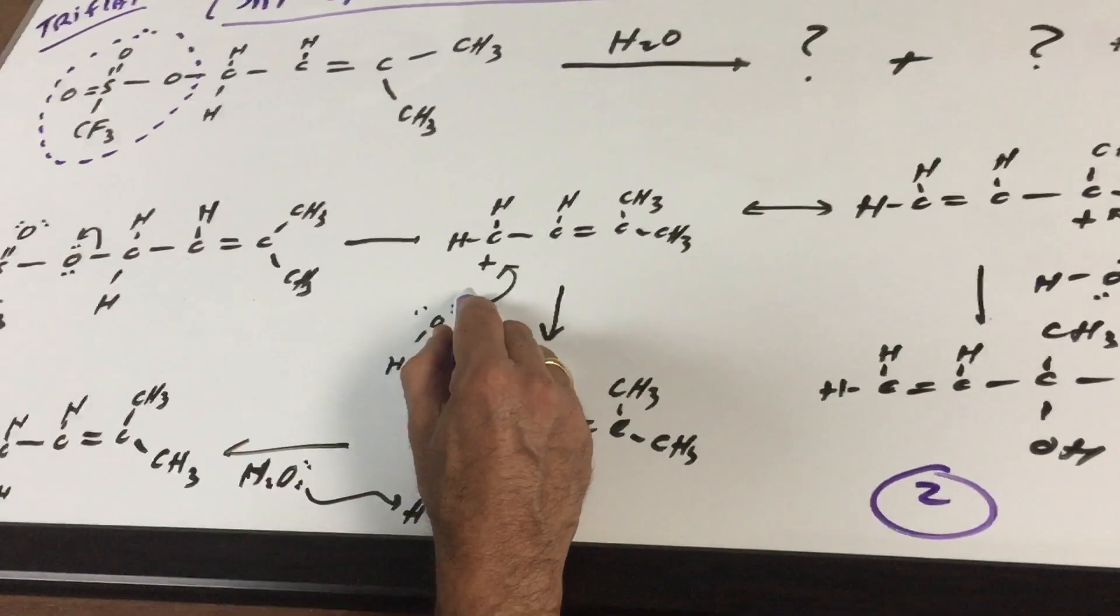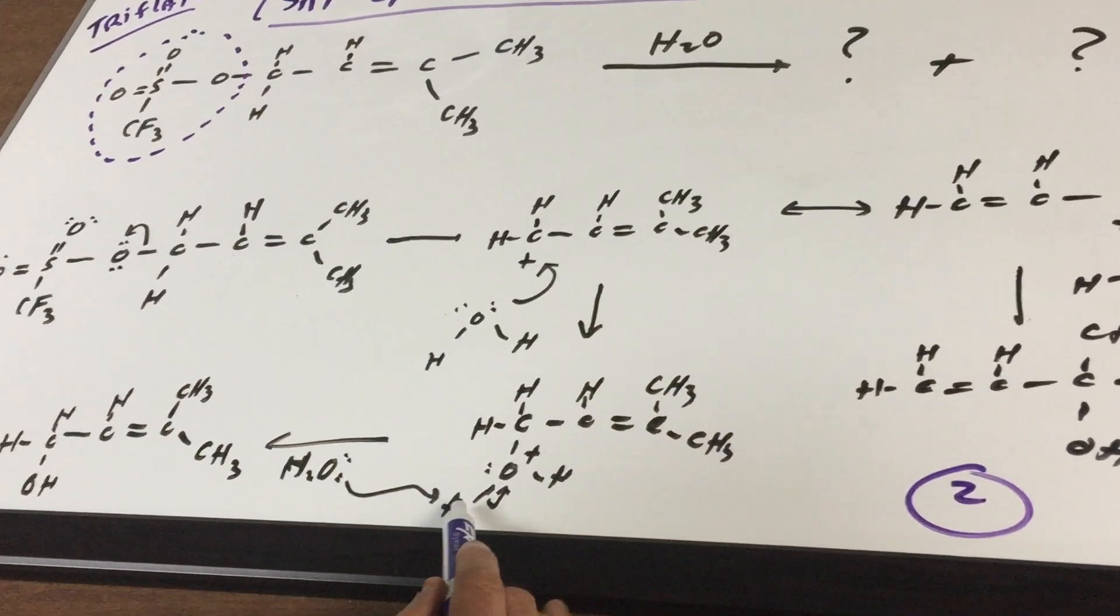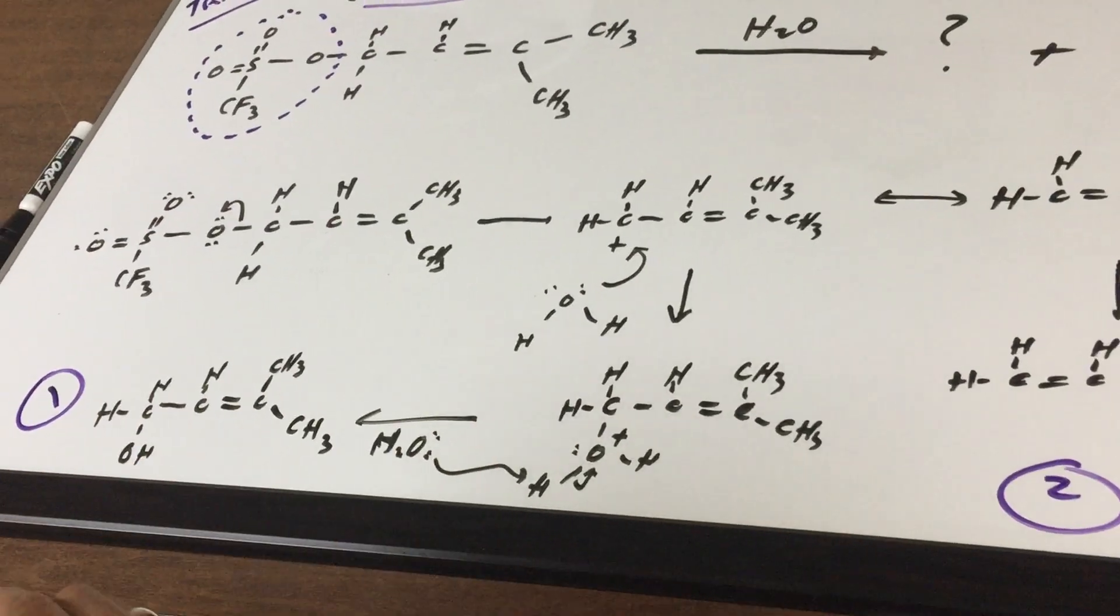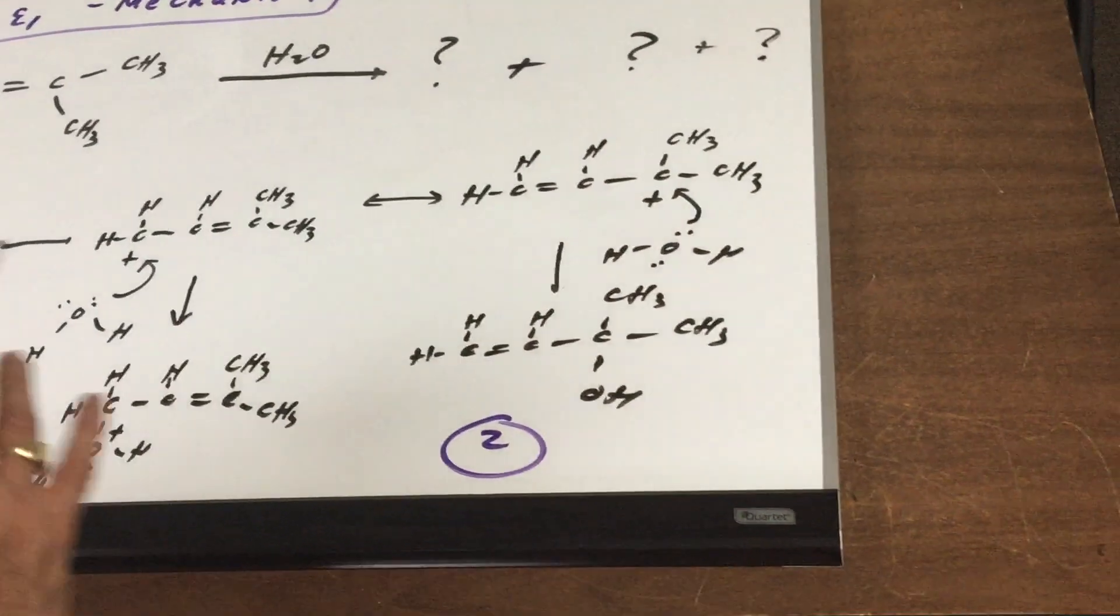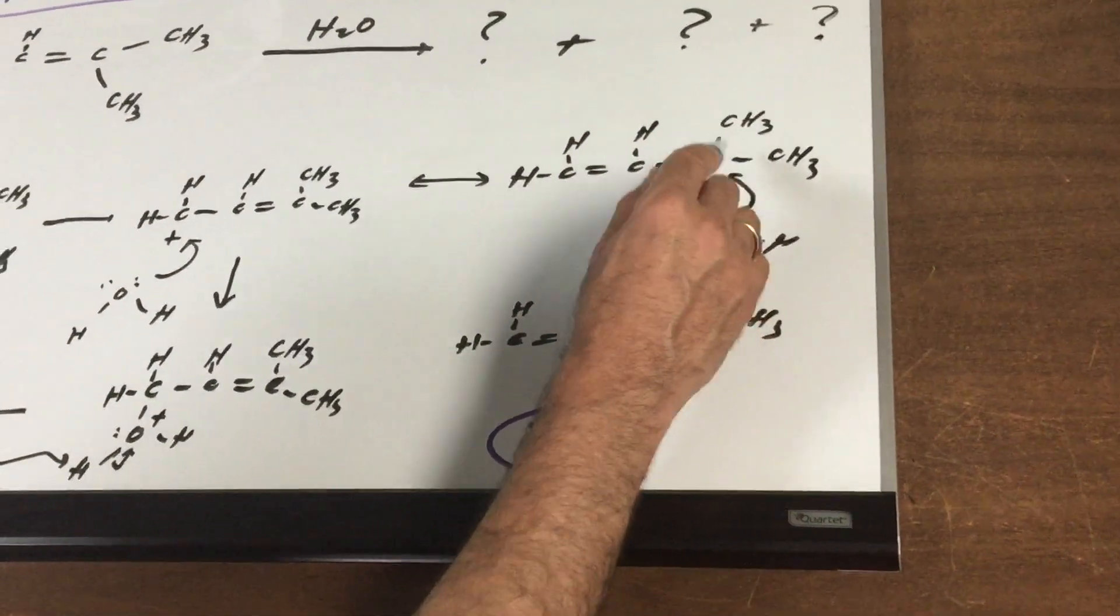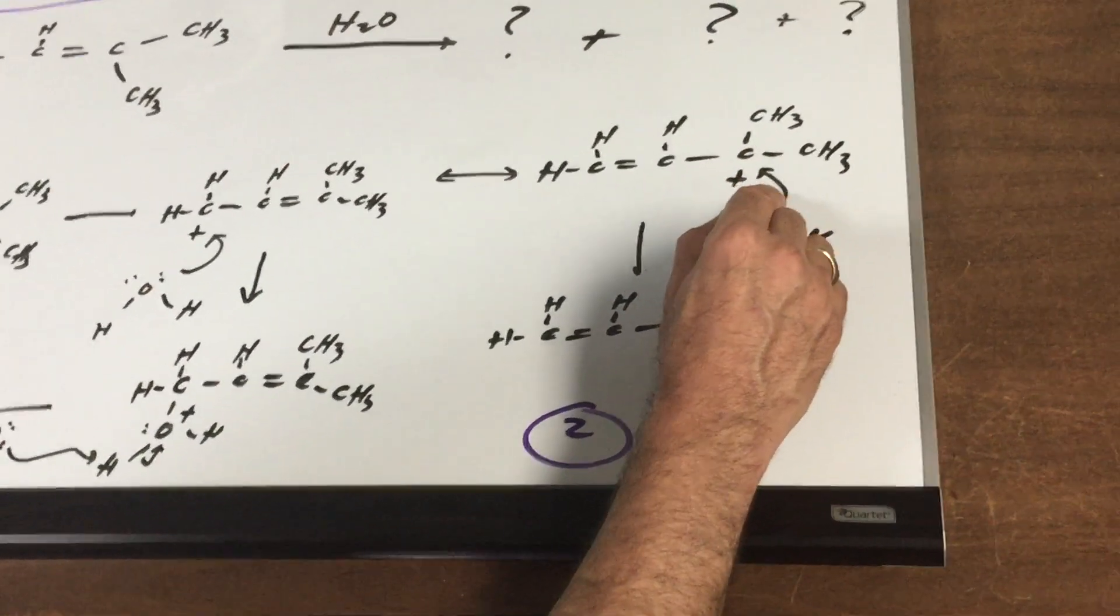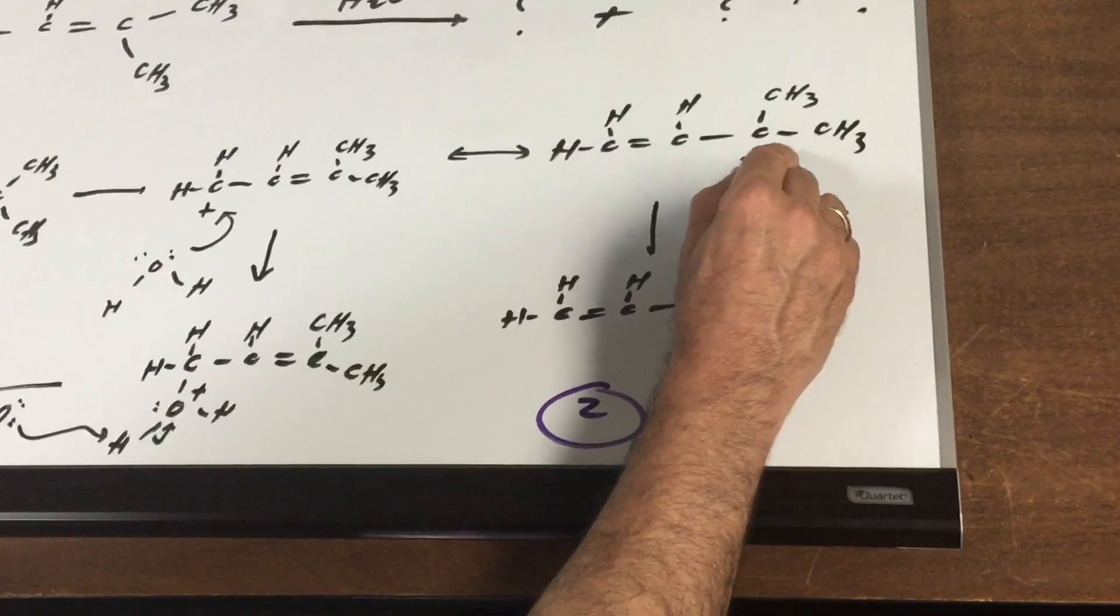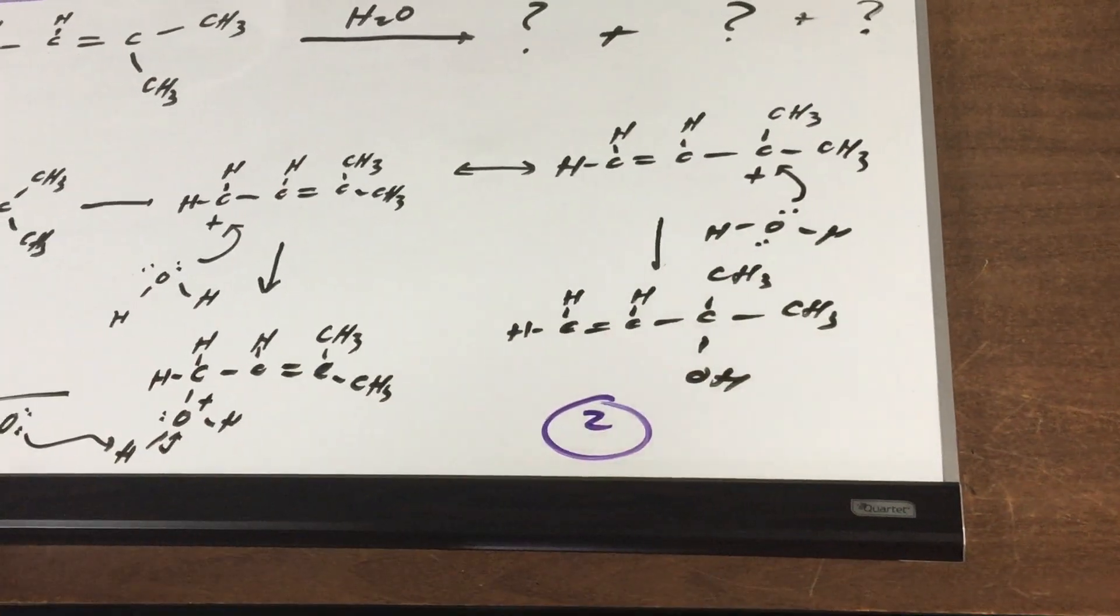If the nucleophile came in and attacked it here, and then we pulled off an H, you would get product number one. If you go to the other one, this is going to be the major path because this is the much better carbocation. As you guys can see, I'm going to attack the more stable carbocation, tertiary allylic. This would be much faster, pull off an H, and that would be two.